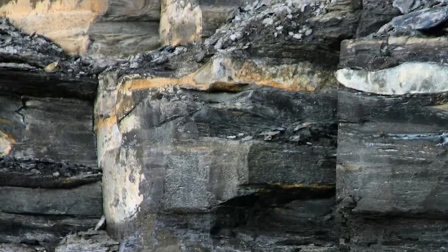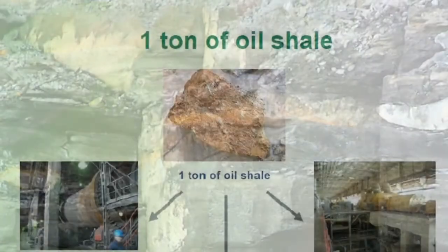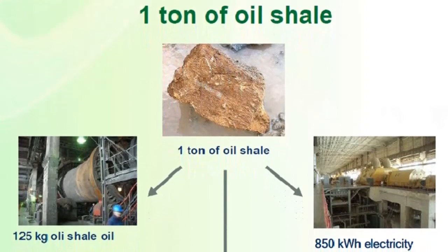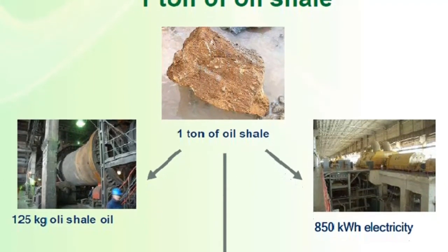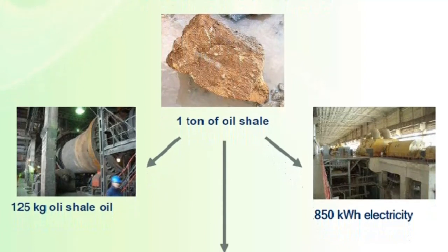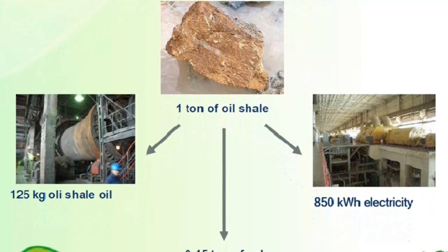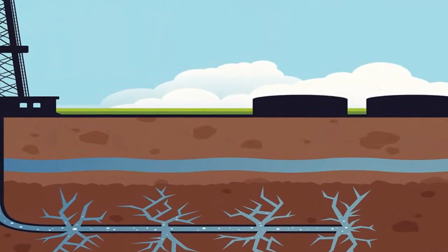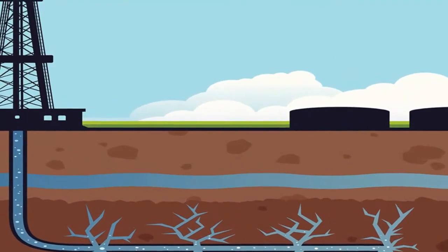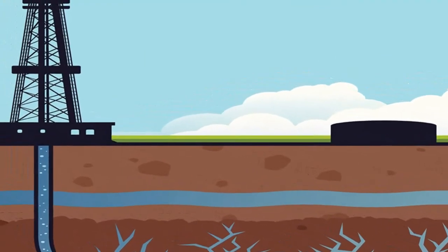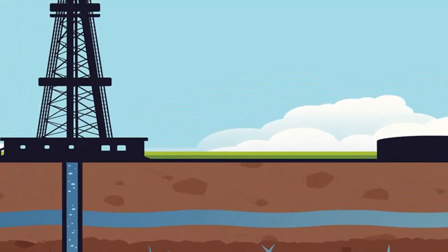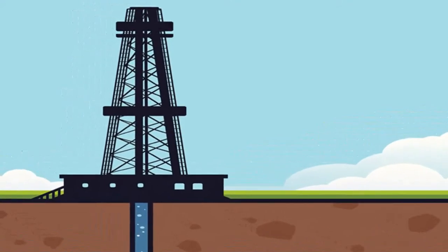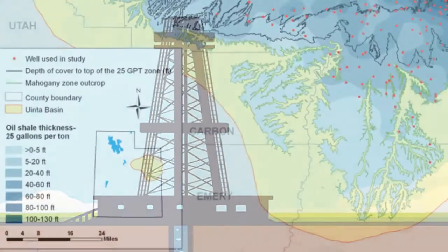Still, estimated U.S. resources are about 14 times as great as those of conventionally recoverable oil, and estimates will probably increase as more geological information is gathered. Roughly half of the world's supply is in the Green River Formation in Colorado, Utah, and Wyoming. Within this region, the oil shales are part of sedimentary layers that accumulated at the bottoms of two vast, shallow lakes during the Eocene epoch, between 57 million to 36 million years ago.